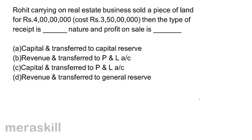Rohit carries on a real estate business and sold a piece of land for Rs. 4 crores, cost Rs. 3.5 crores. The type of receipt is revenue and profit on sale is transferred to profit and loss account. Mind you, Rohit carries on a real estate business — buying and selling property is his business. So the type of receipt is revenue in nature and the profit is transferred to profit and loss account. Correct answer B.